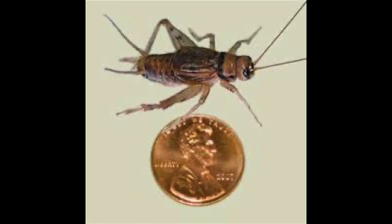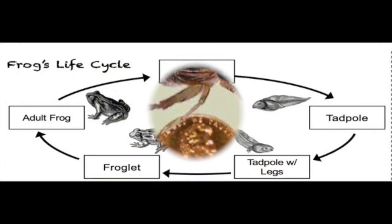Here are a few examples of life cycles. In a frog's life cycle, a frog first starts out as an egg, then after it hatches it turns into a tadpole, and then eventually it grows to a tadpole with legs, then a little froglet, and then it's an adult frog, and the cycle starts all over again.